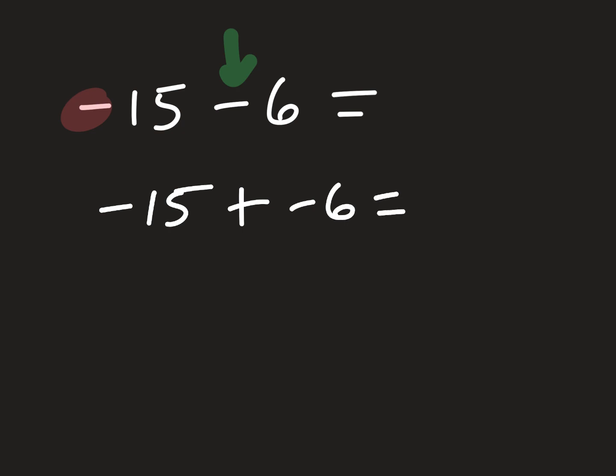So that's going to be the same thing as saying negative 15 plus negative six. Because a negative and subtraction really means the same thing. You're still going down. So because they're the same sign, I'll just add them together. So negative 15 plus negative six is equal to negative 21.